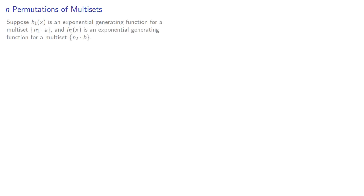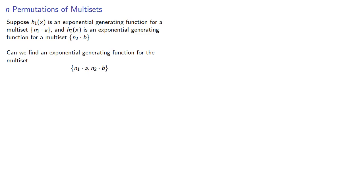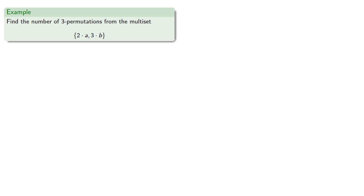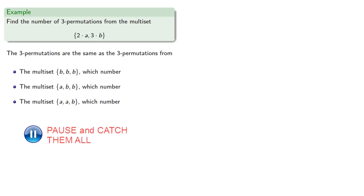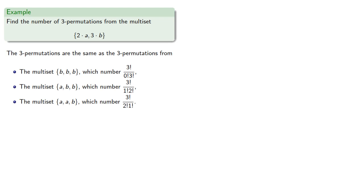Now let's consider n-permutations of multisets. Suppose h1(x) is an exponential generating function for one multiset and h2(x) is an exponential generating function for another. Can we find an exponential generating function for the multiset that combines the two? It helps to know what answer we're supposed to get, so let's find the number of three-permutations from our multiset — the same as three-permutations from the multiset of three b's, one a and two b's, or two a's and one b. Since there are only two a's, we don't have a multiset of three a's, and the number of permutations of each sub-multiset gives us a sum.